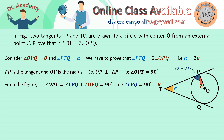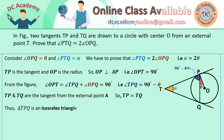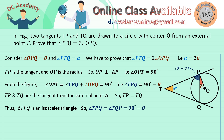We also know that if two tangents TP and TQ are drawn from an external point T, the tangents must be equal in length. So TP equals TQ, which means triangle TPQ is an isosceles triangle. For an isosceles triangle, the base angles must be equal. Therefore, angle TPQ and angle TQP are both equal to 90 minus theta.